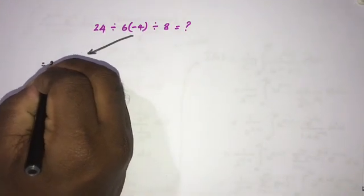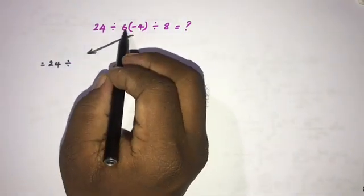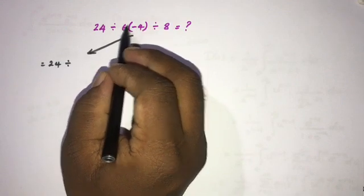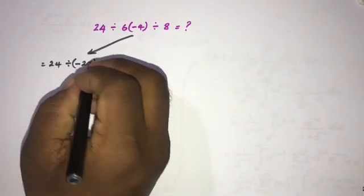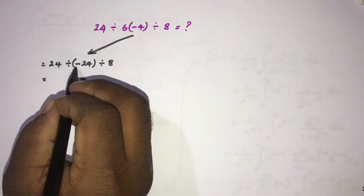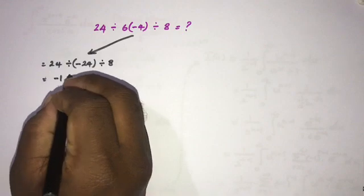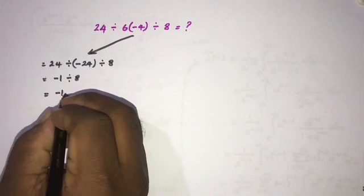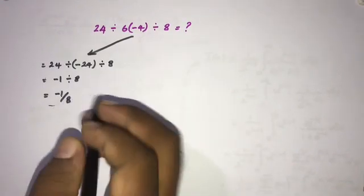Some people take the first part as equal to 24, then see the division symbol, and treat the bracket as: first solve 6 times minus 4 which equals minus 24, then 24 divided by minus 24 equals minus 1, then minus 1 over 8. But is this correct?